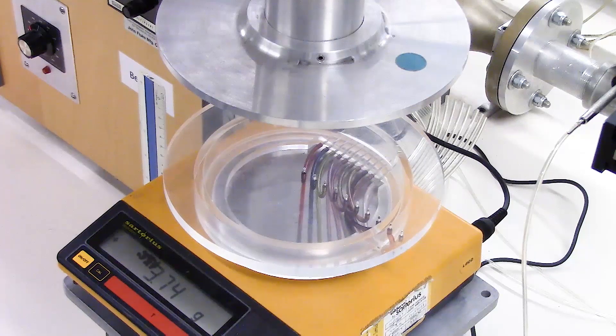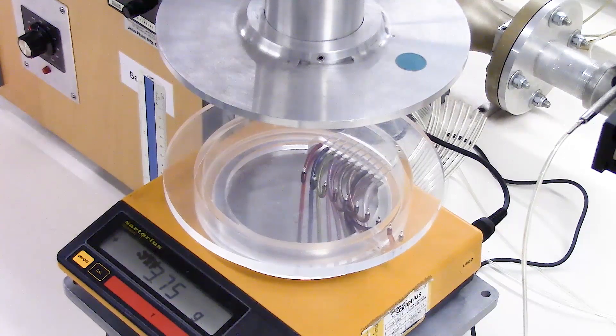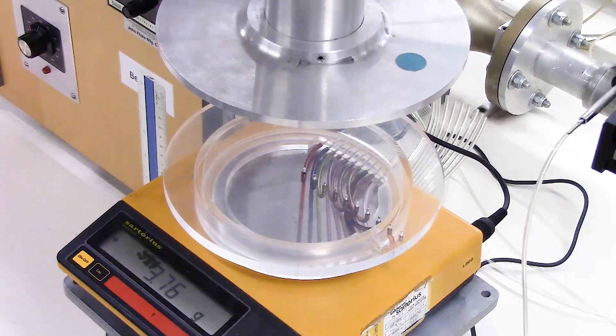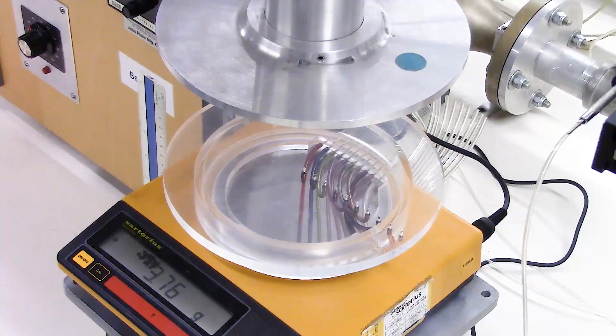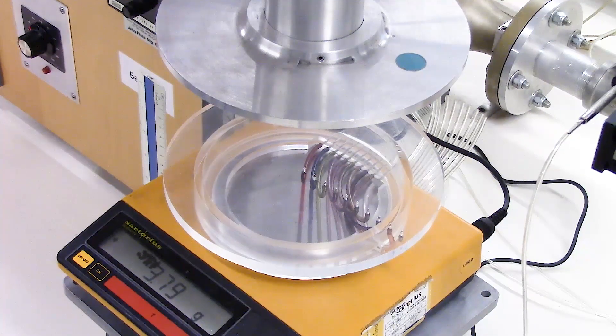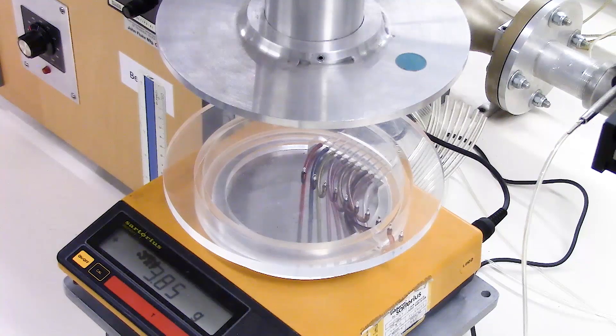we've moved the pitot tube out of the way. And we're going to raise the scissor jack up, moving the plate on the balance closer to the jet. And we're going to monitor how the force changes as we do that.